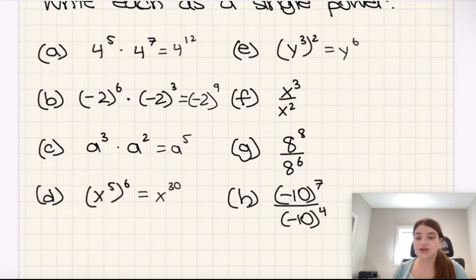Then we have x cubed over x squared. So in this case, we would subtract the powers. Now, 3 minus 2 is just 1, so the answer is x to the power of 1, which is just x.